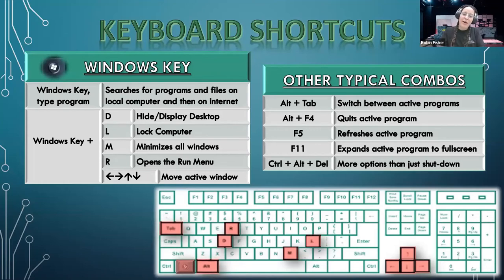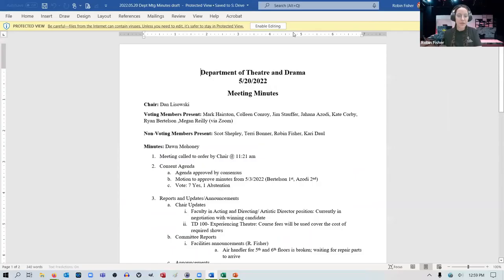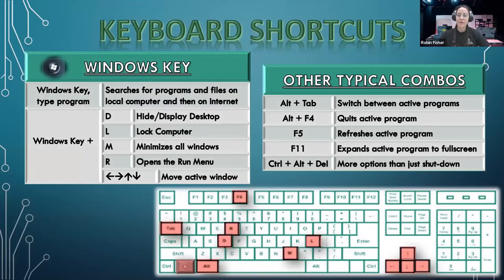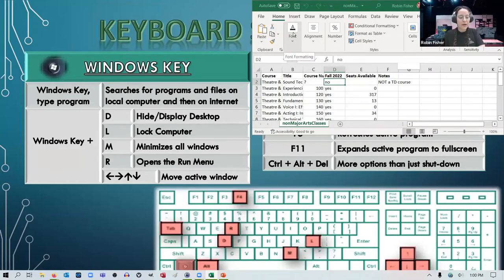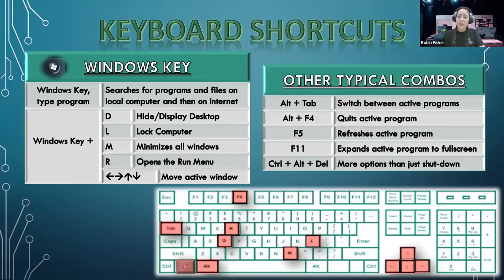After Alt + Tab, I've got Alt + F4, because this one is really important with systems that are a little older or slower — something might be freezing up on you. Or maybe you're just done working on your document and you want to close it. If you hold down the Alt key and tap F4, that actually closes the program. So don't do that on your Zoom right now. But if you've got a bunch of things open and you want to close some of them and keep some open, Alt + Tab to find the one you want to close, and then Alt + F4 to close it.